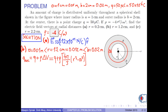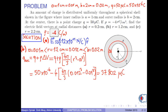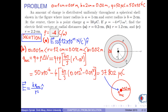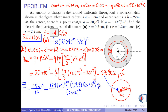Now we substitute the numerical values into this formula, and we obtain the enclosed charge as 37.802 microcoulombs. According to the shell theorem, this charge can be considered as if it were concentrated at the center. Then the electric field has the formula K times Q enclosed over R squared R-hat. With the numerical values, we obtain the electric field at R equals 1.2 cm as approximately 0.0236 times 10 to the 11 N per coulomb R-hat, which can be shown in the figure as follows.